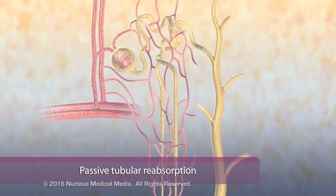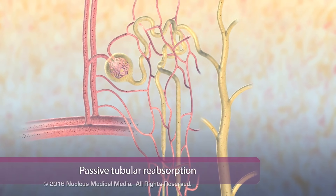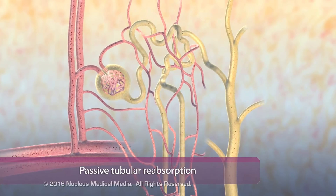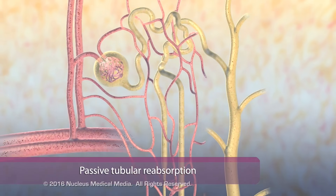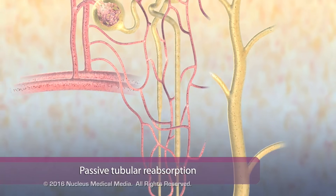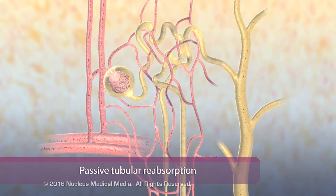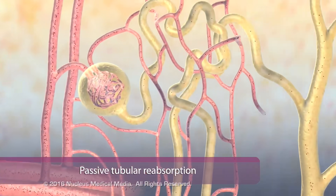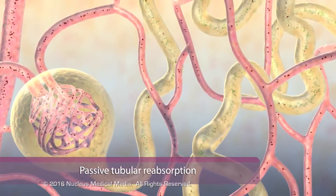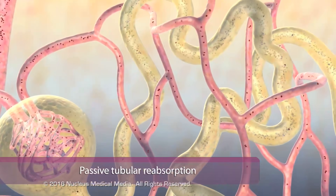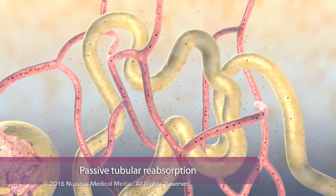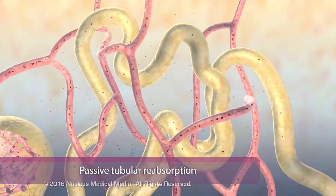The process of passive reabsorption of water, solutes, and ions begins in the proximal tubule, continues in the Henle loop, and ends in the distal and collecting ducts. Water-soluble drugs stay in the tubule, while unionized and lipid-soluble drugs are primarily reabsorbed across renal tubules.